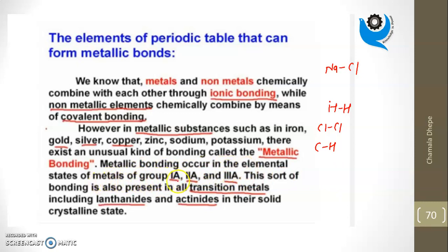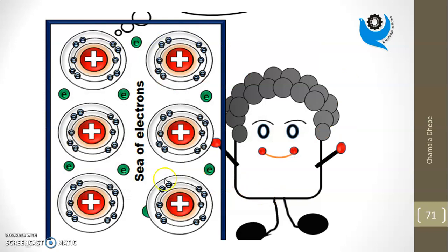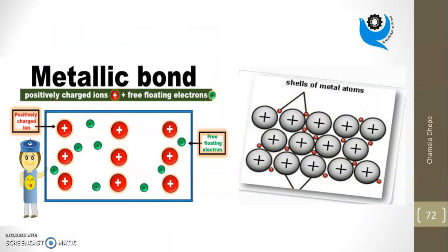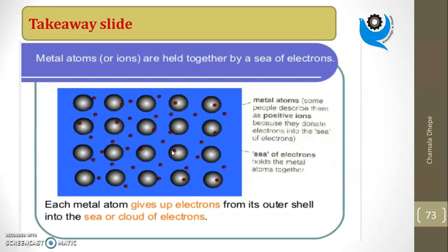Metallic bonding occurs in elements of Group 1A, 2A, and 3A metals. This sort of bonding is also present in all transition metals including lanthanides and actinides in the solid crystalline state. The sea of electrons — the positive core — has attractive force forming the bond. The valence electrons, also called delocalized electrons, sea of electrons, or cloud of electrons, are free to float anywhere in the crystal.